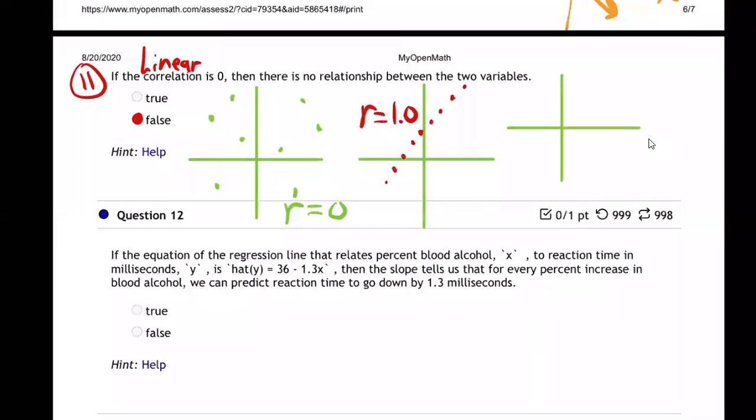If the dots go down, maybe not perfectly, but generally go down like this, right?